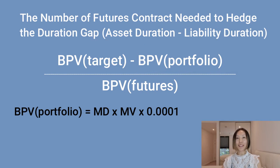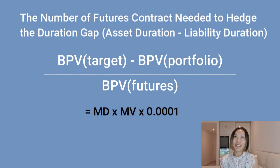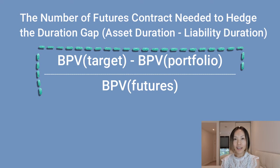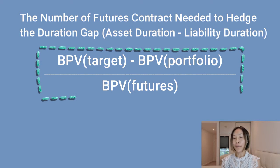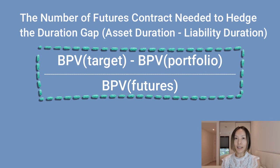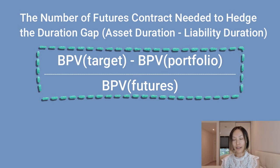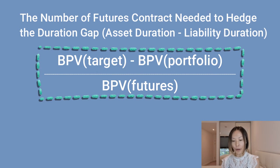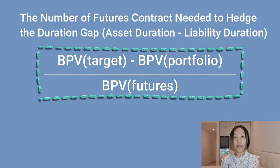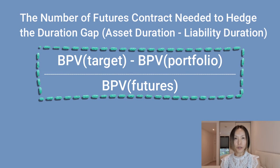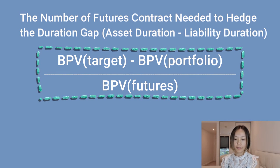The most important thing we are calculating is the number of futures contracts needed for the hedge. The number of contracts equals your target BPV minus the existing, current BPV of your portfolio, divided by the BPV of the futures contract.